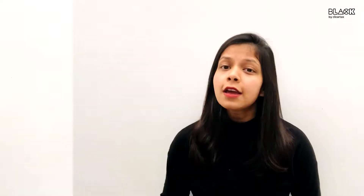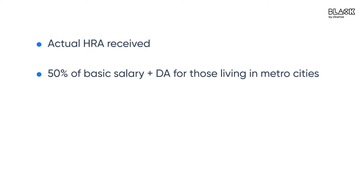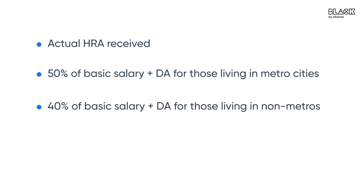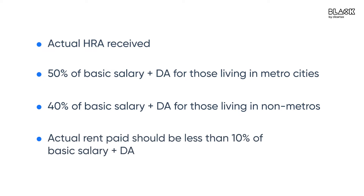The tax reduction available as HRA is the least of the following amounts: first, actual HRA received; second, 50% of basic salary plus DA for those living in metro cities; third, 40% of basic salary plus DA for those living in non-metros; and fourth, actual rent paid minus 10% of basic salary plus DA.